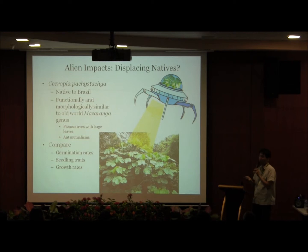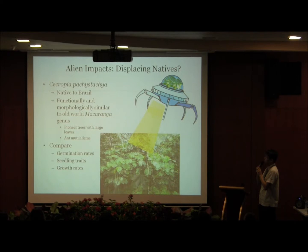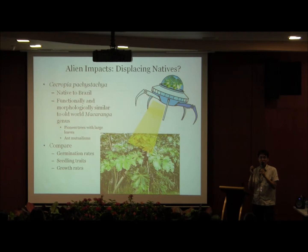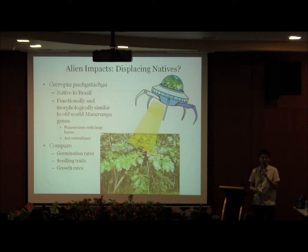I'll use the case of Cecropia to illustrate this. Cecropia is native to Brazil and is very similar to Macaranga because both have associations with ants. Macaranga gigantea, the subject of our study, is not strictly a myrmecophyte but it does have ant associations. Both are pioneer trees with large leaves. What we did was compare typical competition studies — looking at whether they occupy the same niche and whether one is competitively superior. We compared germination rates, seedling traits, and growth rates.